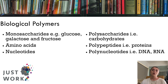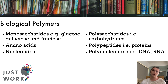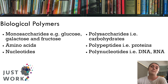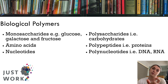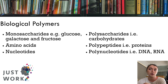A couple of examples of biological polymers are polysaccharides, which are carbohydrates; polypeptides, which are proteins; and polynucleotides, which form our DNA and RNA. What you might notice is that monomers start with 'mono' and polymers start with 'poly' — that's how we can distinguish between the two different molecules.